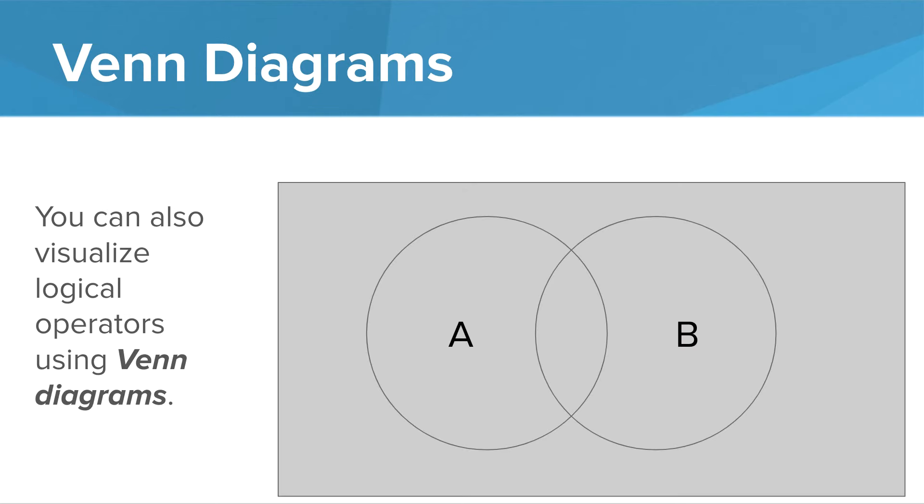You can also visualize logical operators using Venn diagrams. Imagine the variable A represents whether or not a dart landed in circle A and variable B represents whether or not a dart landed in circle B.